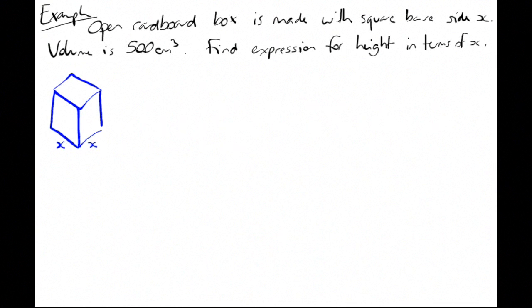The volume is length times width times height, x times x times h. So V = x²h. We know the volume is 500, so 500 = x²h. Find an expression for height in terms of x: h = 500/x².